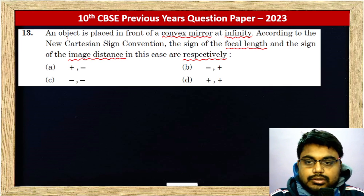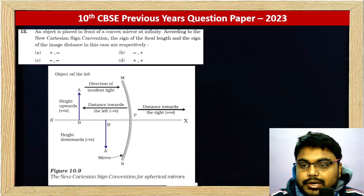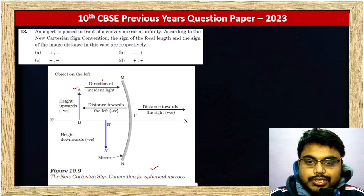The new Cartesian sign convention, which is mentioned in NCERT. The object is here, the direction of incident light is here.